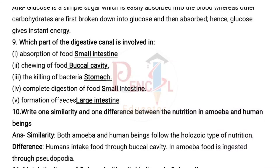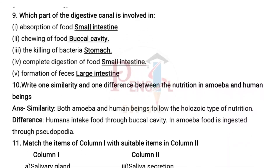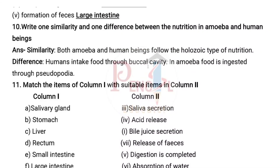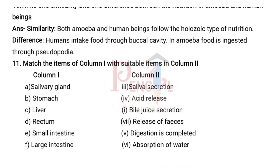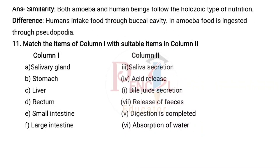Tenth main: Write one similarity and one difference between the nutrition in amoeba and human beings. Answer: Similarity — both amoeba and human beings follow the holozoic type of nutrition. Difference — humans intake food through the buccal cavity, whereas in amoeba food is ingested through pseudopodia.